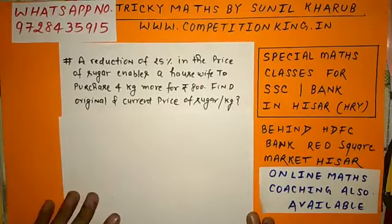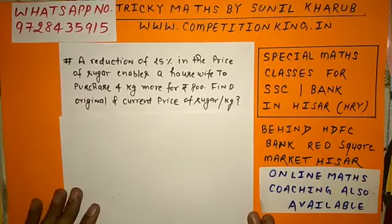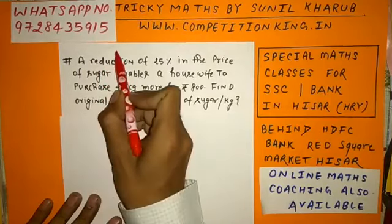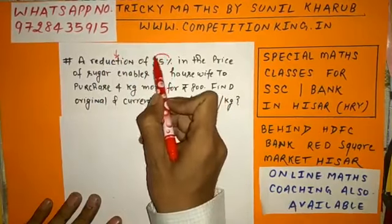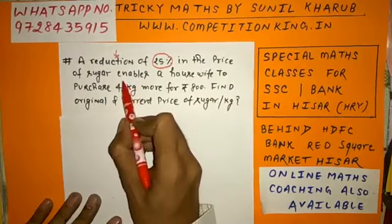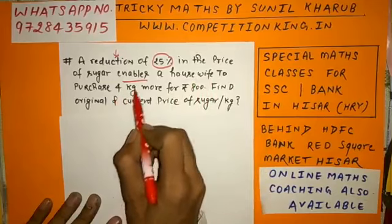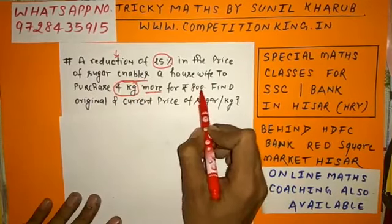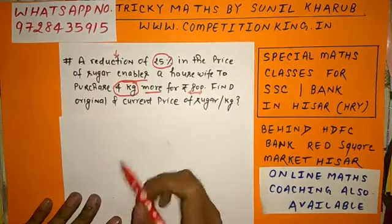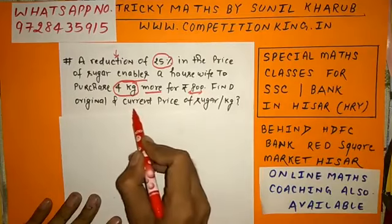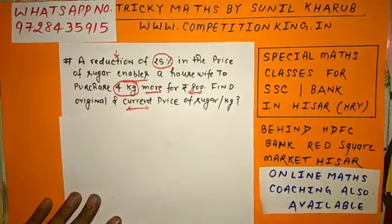Now students, we will take a very very important question — you can say the most important question on percentage. Read out the question: a reduction of 25% in the price of sugar enables a housewife to purchase 4 kg more for Rs. 800. Find the original as well as current price of the sugar per kg.